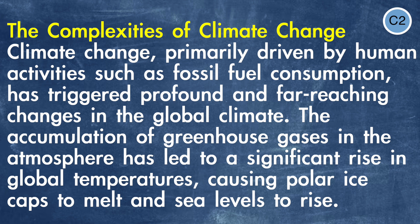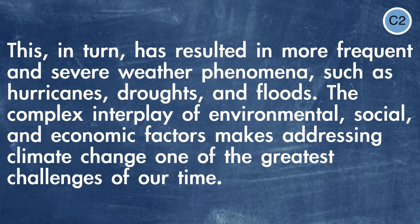We've made it — this is the highest level, C2. Let's see what you make of the C2 level text. The title is 'The Complexities of Climate Change.' Climate change, primarily driven by human activities such as fossil fuel consumption, has triggered profound and far-reaching changes in the global climate. The accumulation of greenhouse gases in the atmosphere has led to a significant rise in global temperatures, causing polar ice caps to melt and sea levels to rise. This, in turn, has resulted in more frequent and severe weather phenomena such as hurricanes, droughts and floods.